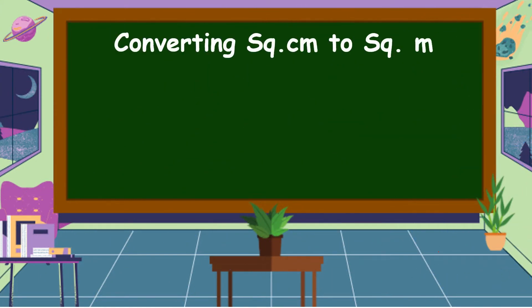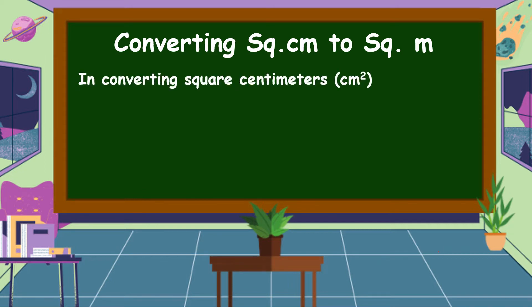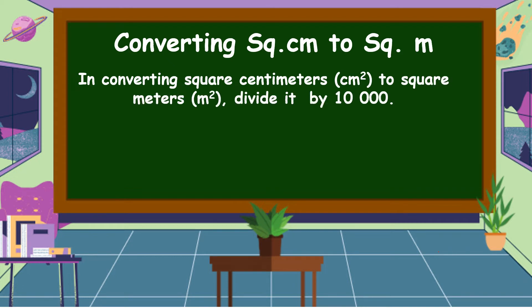Next, we're going to discuss converting square centimeters to square meters. As we know, centimeters are smaller than meters, so this is converting from a smaller unit to a larger unit. When converting square centimeters to square meters, divide by ten thousand.